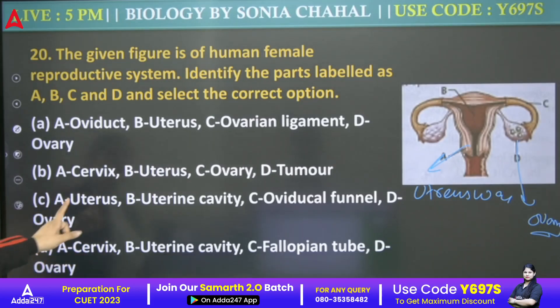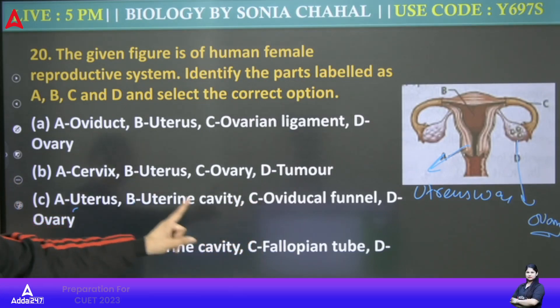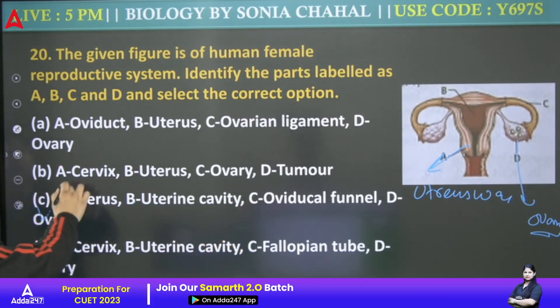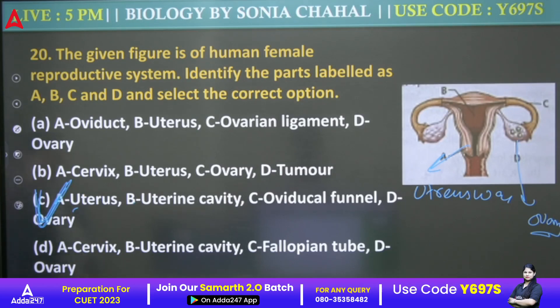B is uterine cavity — true. Ovary ductal funnel. D is ovary — yes. C1 is our correct one — C1 is our correct option.